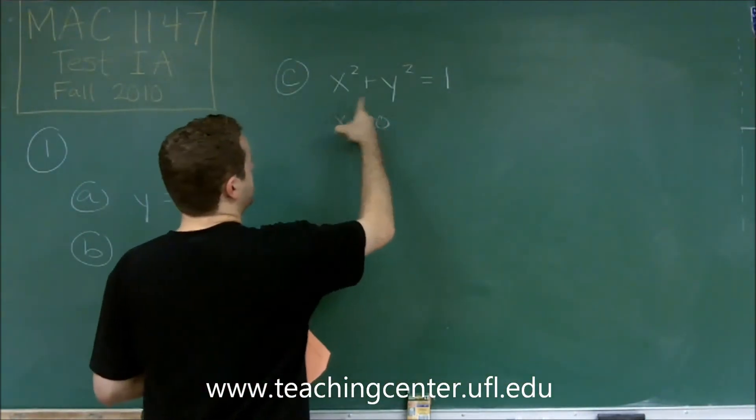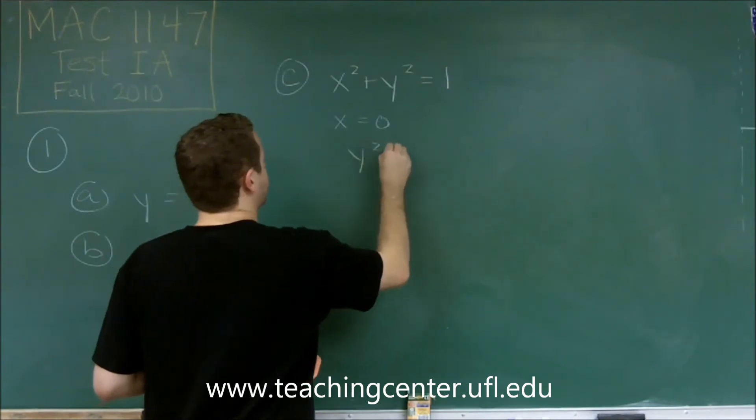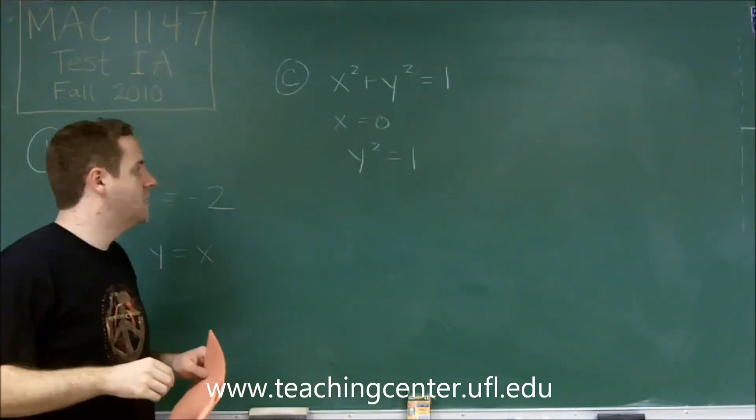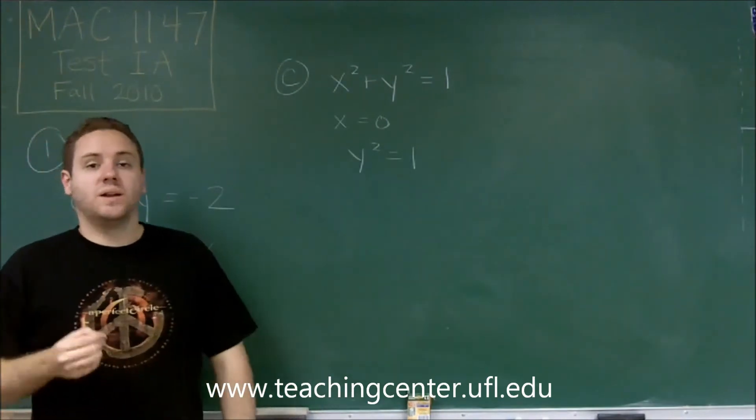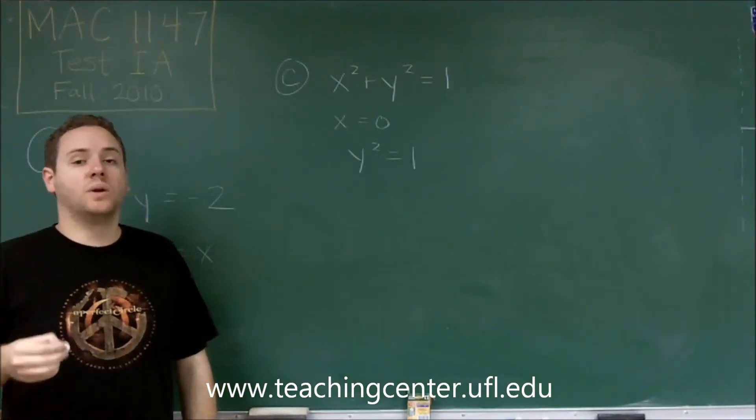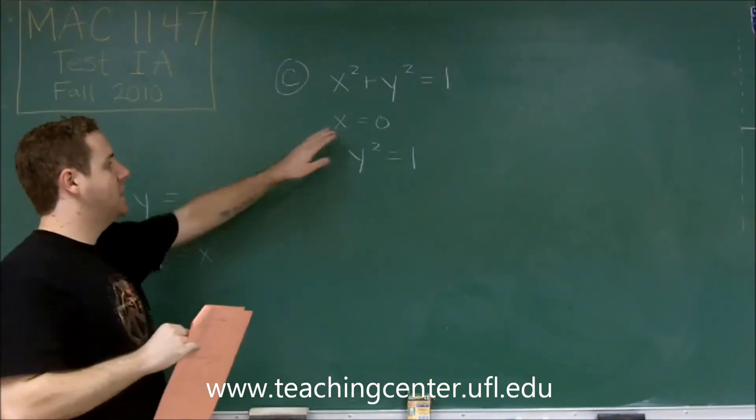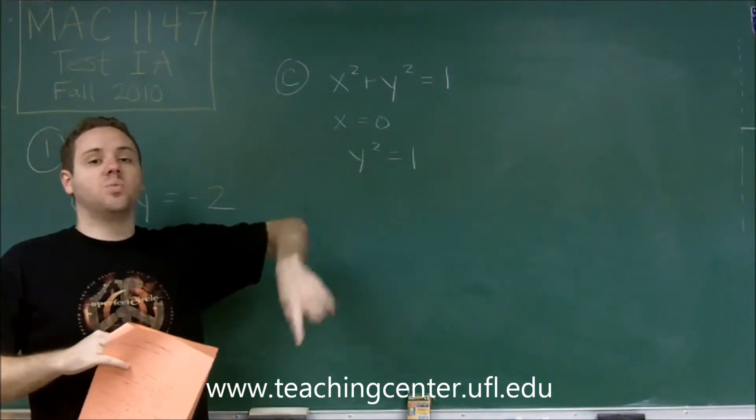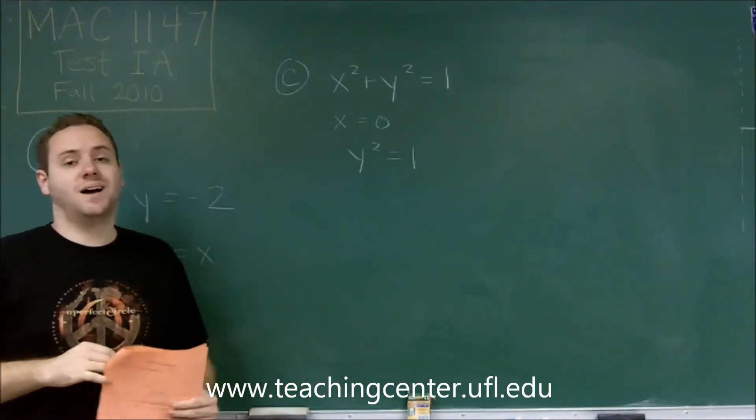Well, if x equals 0, then we have y squared equals 1, because this would disappear. But y squared equals 1 has multiple answers. y could be 1 or negative 1. So by plugging in x equals 0, we got the points 1 or negative 1. So that is not a function.